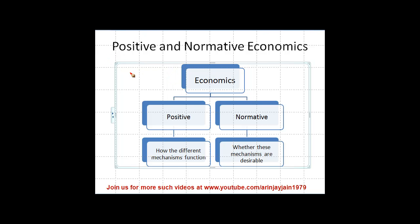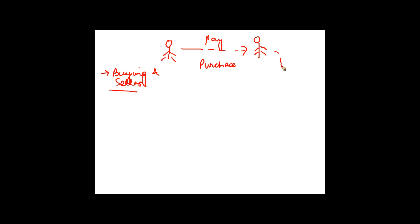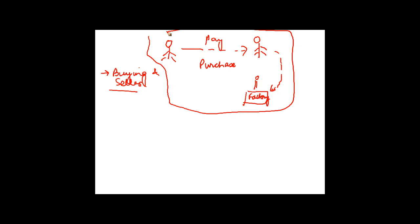We saw something relating to buying and selling earlier. There was a mechanism in place where there were buyers and there were sellers. The buyer used to go to the seller, make purchases and pay money. The seller in turn might be procuring goods from a factory. So economics basically studies what are the various mechanisms through which the basic problems in an economy are being satisfied.